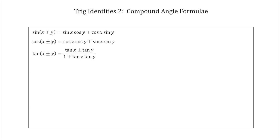Finally, there's the formula for tangent, which is the most complicated: tan(x ± y) = (tan x ± tan y) / (1 ∓ tan x tan y). Hopefully in an exam you'll have these on a formula sheet; if not, you'll need to remember them. For the tan formula, if it's a plus on the left, there's a plus in the numerator and a minus in the denominator, and vice versa — it's a bit tricky but manageable.